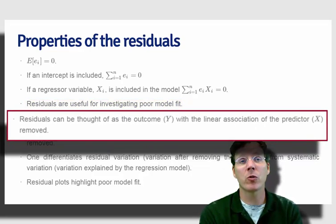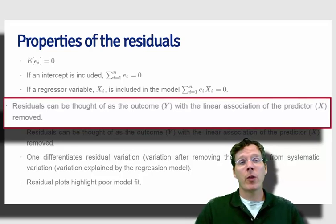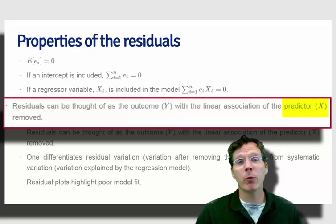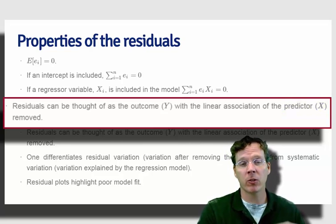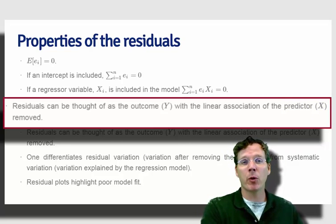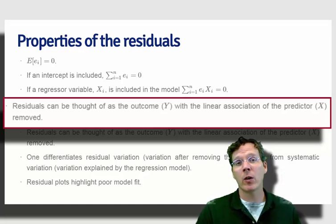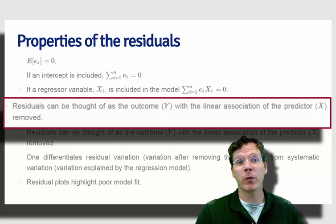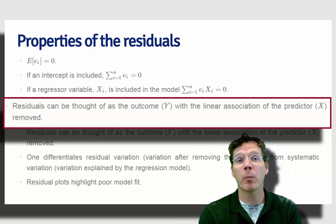Another very common use of residuals is to think of them as the outcome Y with the linear influence of the predictor X having been removed. So for example, if we wanted to, in some subsequent model or some subsequent analysis, analyze diamond prices but in a way that has already been adjusted for their weight—calibrating all the diamond prices to be on the same scale regardless of their weight—we would take those residuals from the model fit that has diamond prices as the outcome and weight as the predictor.